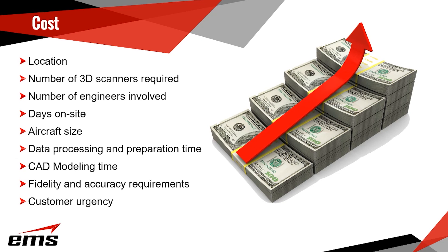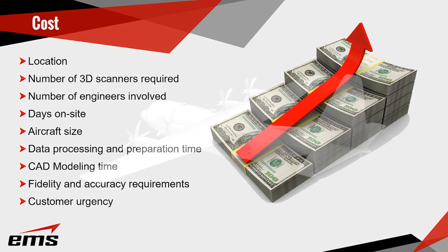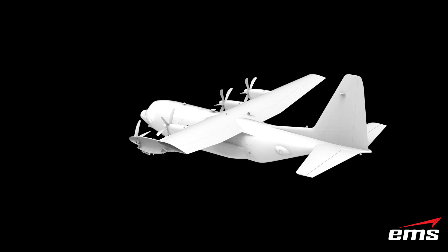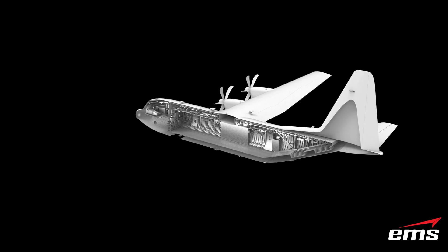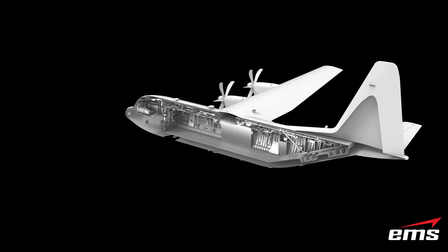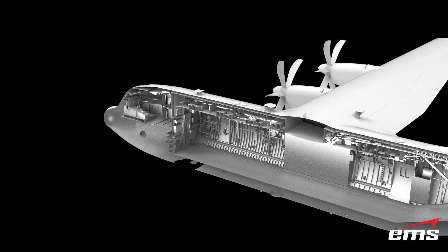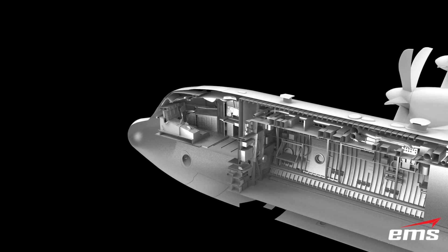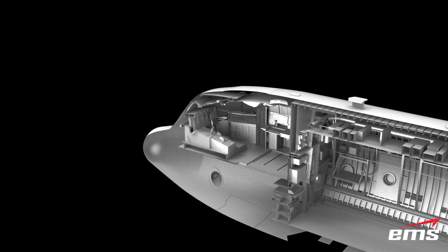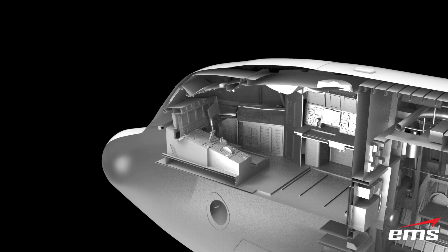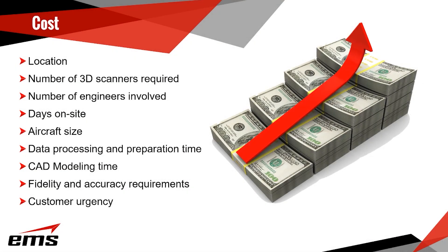After scanning, there's data processing time — taking all the raw scan data, cleaning it up, aligning it, merging it, and doing further cleanup. That could be another week or two weeks. Then comes CAD modeling, which takes the most time — anywhere from a few days to months, involving one or multiple engineers. Higher accuracy requirements usually mean additional equipment, different steps, and additional processes. Higher fidelity requires scanning at higher resolution, making files bigger and scan time longer. Customer urgency — needing a project done right away — also drives costs.